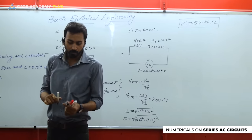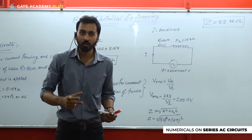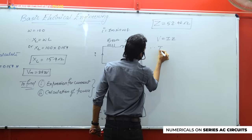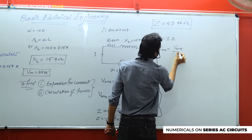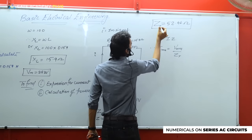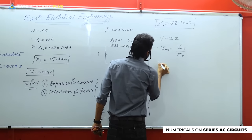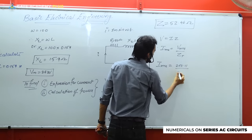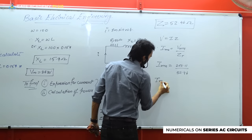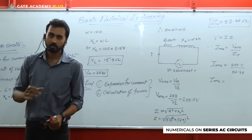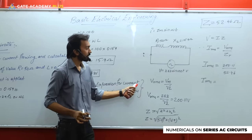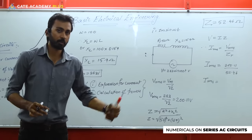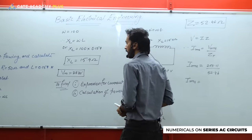Applying Irms = Vrms / Z total = 200.11 / 52.46. This gives Irms ≈ 3.81 amperes. But for the expression of current, we need Im, not Irms. Once we have Irms, we can convert it to Im using the formula Im = Irms × √2.